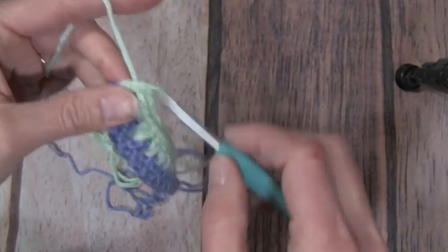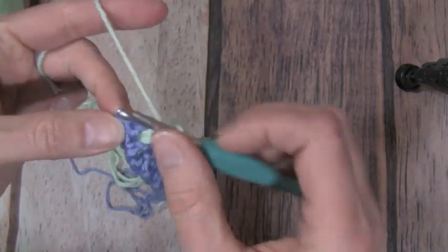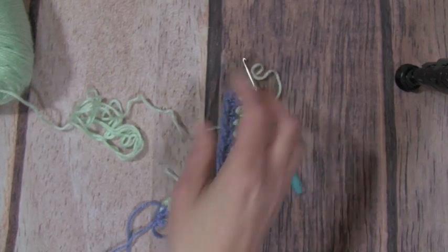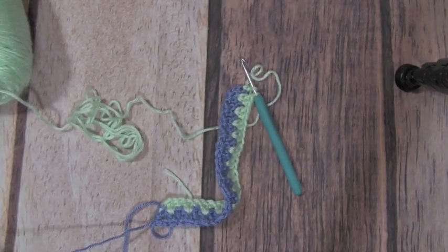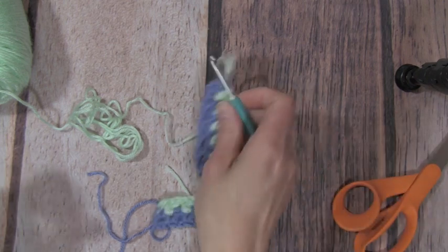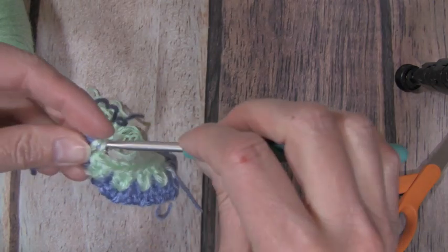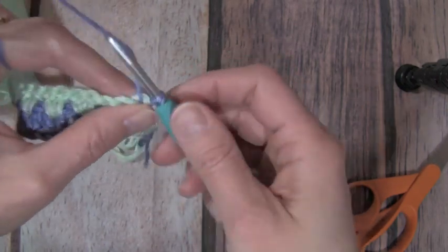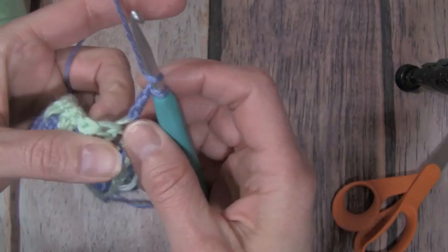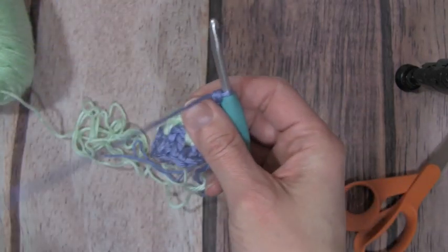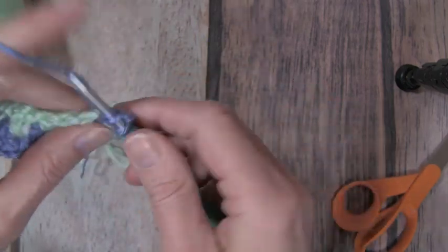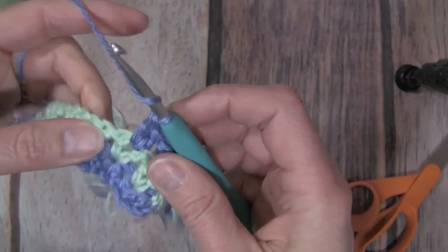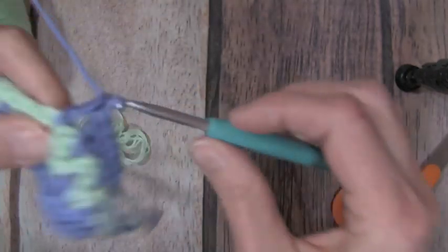I'm going to continue on with row three. At the end of that last double crochet, I'm going to pull in my new color and then turn, and then chain three. And really now, we're just going to be repeating that row two throughout the entire pattern. Again, two double crochets in that space between the two double crochets of the previous row.